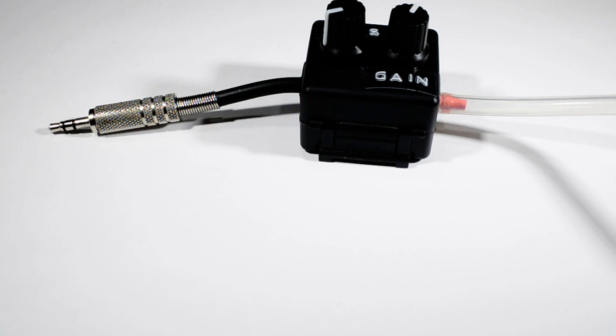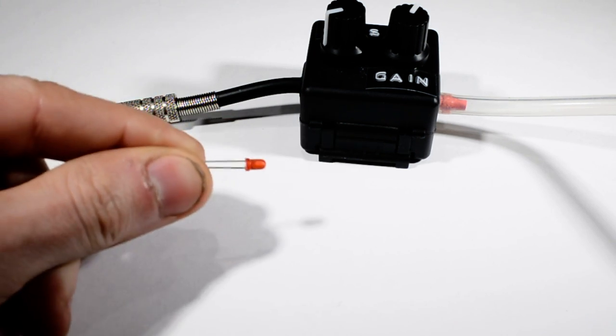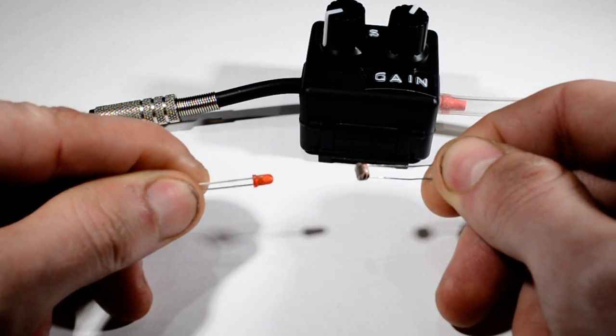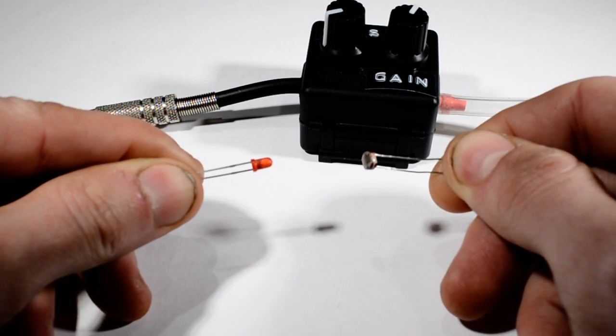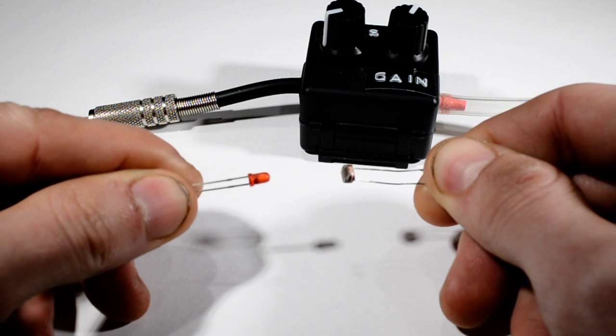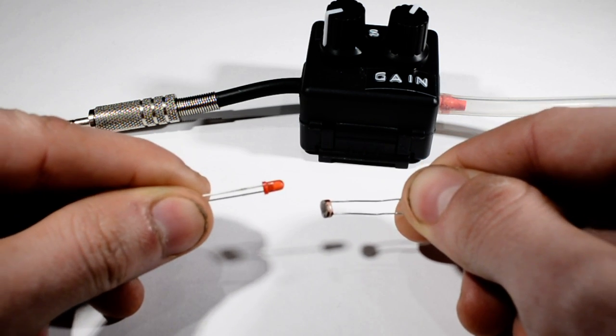Well, the easiest way to build a voltage-controlled amplifier is to take an LED and an LDR. Use a resistor to turn voltage into current, LED turns current into light, LDR turns light into resistance. Then stick the LDR in a potential divider or amplifier circuit.